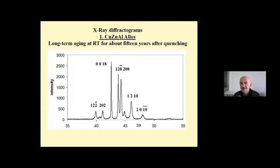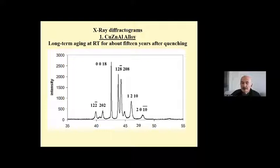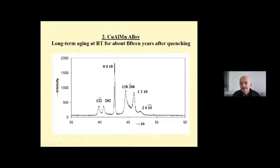Powder diffractograms were obtained for all specimens at the aging stage at room temperature. This is an X-ray diffractogram taken from a copper-zinc-aluminum alloy sample after long-term aging at room temperature for about 15 years after quenching. As you can see, peak intensities and peak characteristics are different and this diffractogram exhibits superlattice reflections. This is another X-ray diffractogram taken from a copper-aluminum-manganese alloy sample after long-term aging at room temperature about 15 years after quenching. As you can see, this diffractogram also exhibits the same characters with the same plane pairs.